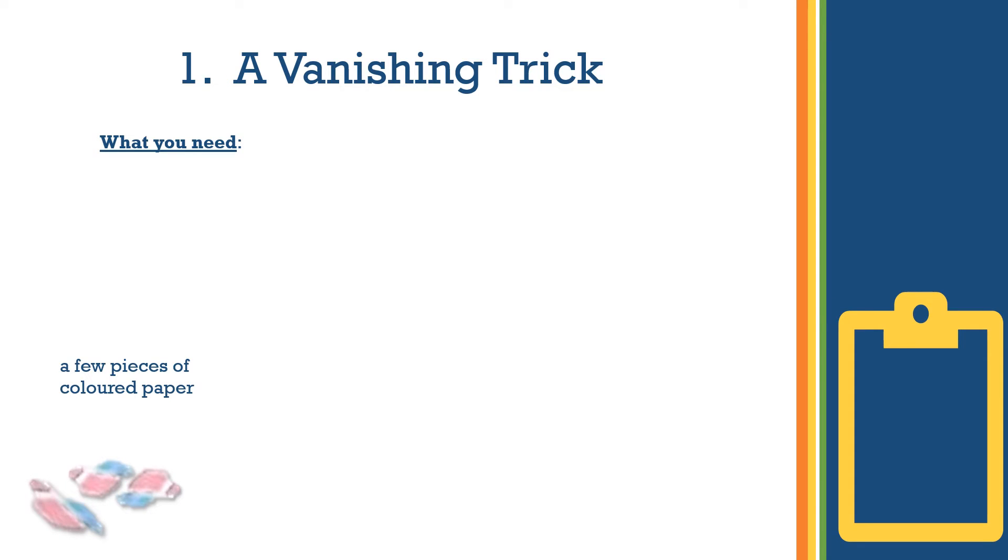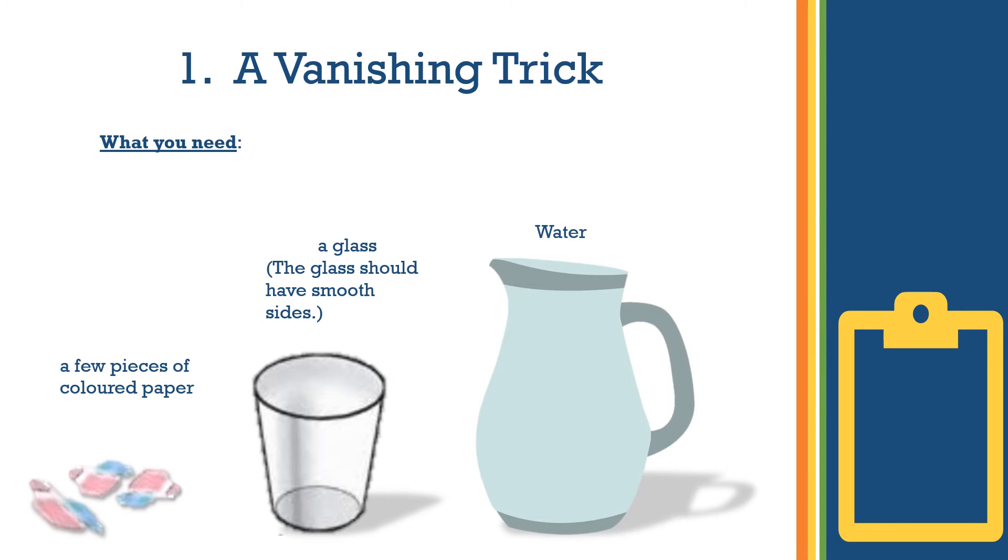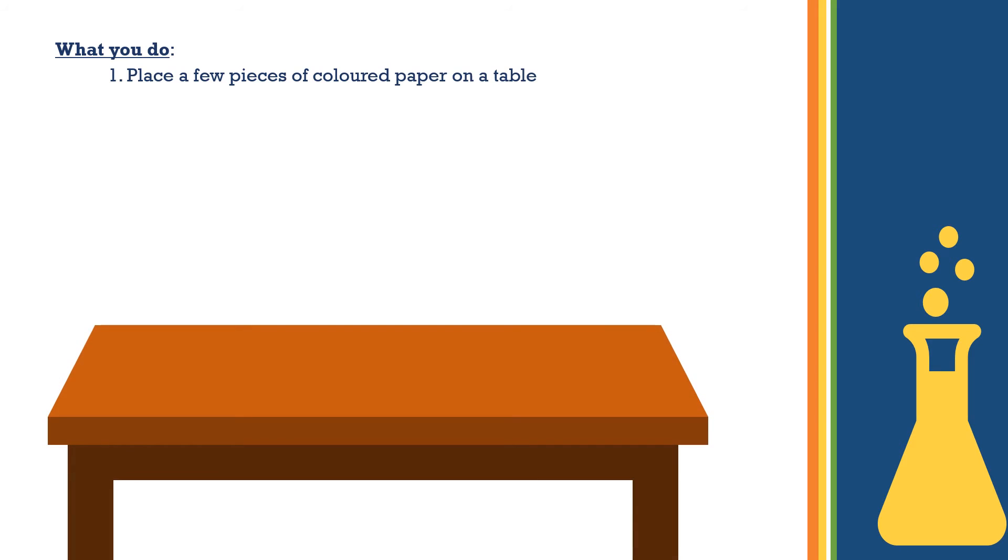You need a few pieces of colored paper, a glass—the glass should have smooth sides—and water. Put the colored paper on a table. Put the empty glass on top of the pieces. You can see the pieces clearly through the glass.